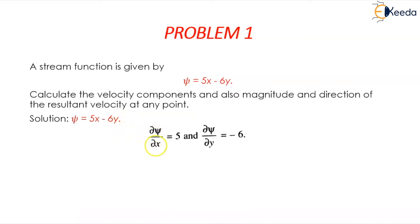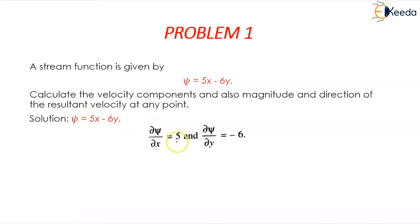So ∂ψ/∂x is equal to 5 and ∂ψ/∂y is equal to minus 6. We have just partially differentiated this. When you differentiate 5x with respect to x partially you get 5, and similarly the result for the y-term is minus 6.